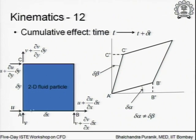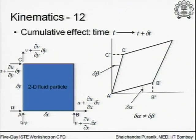In particular, the horizontal line AB gets not only translated but also rotated through an angle delta alpha. Similarly, the vertical line AC not only gets translated but also gets rotated through an angle delta beta. This is happening because there are velocity gradients that exist in the flow.